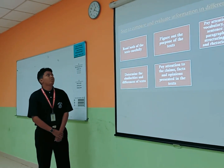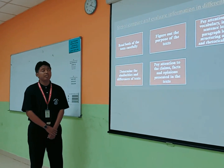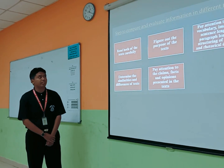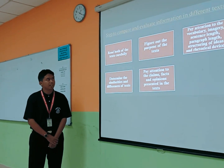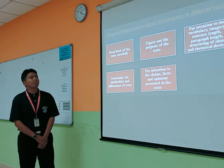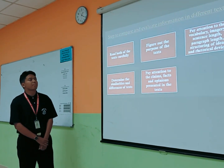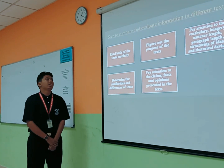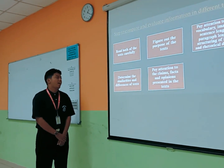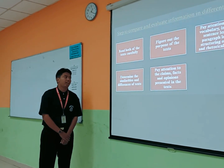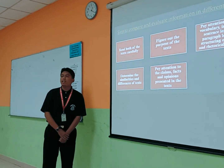To compare and evaluate information in different texts: first, you need to read both texts carefully; figure out the purpose of each text; then pay attention to the vocabulary. Next, determine the similarities and differences between the texts, and finally pay attention to the claims, facts, and opinions present in the texts.